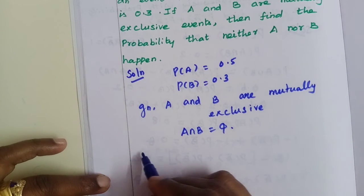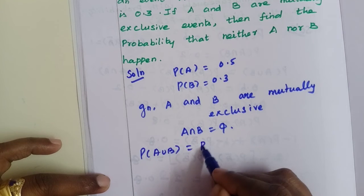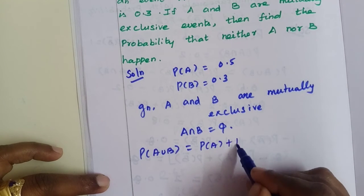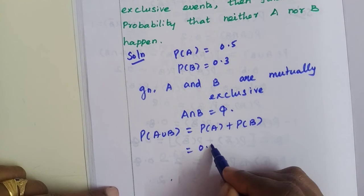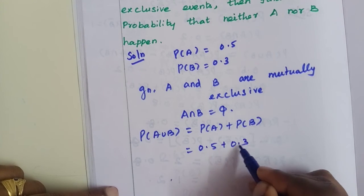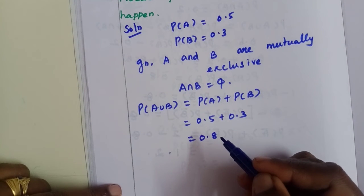So P of A union B is equal to P of A plus P of B, which is 0.5 plus 0.3 equals 0.8.